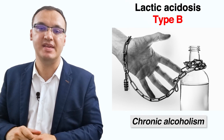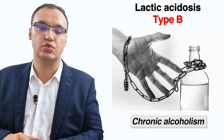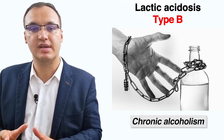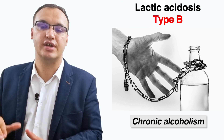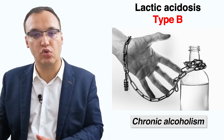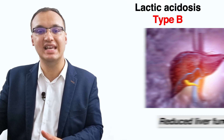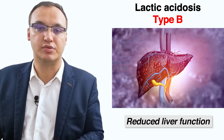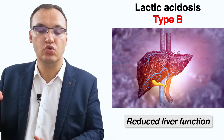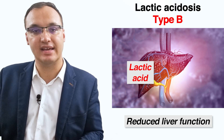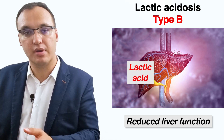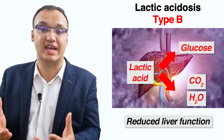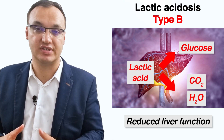An additional cause of type B lactic acidosis is chronic alcoholism. In alcoholism, lactate production is usually normal; however, because alcohol reduces the liver's normal function, lactate is not used by the liver. Usually, lactic acid is taken to the liver by the blood, where it is either converted to glucose or oxidized to carbon dioxide and water.